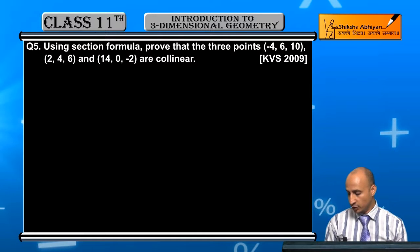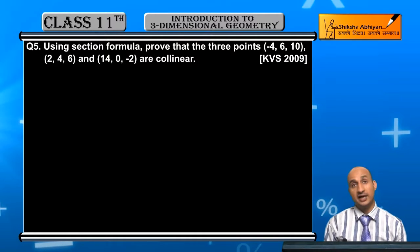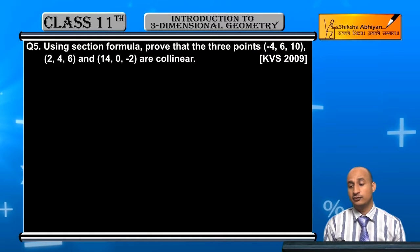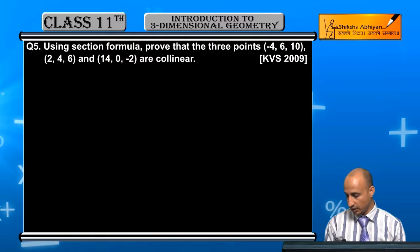Now today we see question number 5. Question 5 is: using section formula, prove that 3 points (-4, 6, 10), (2, 4, 6) and (14, 0, -2) are collinear.